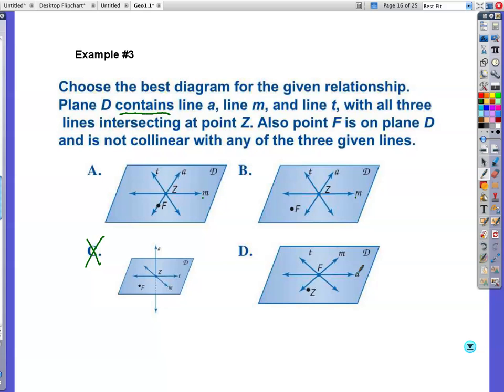All right, let's just check A, M, and T. With all three lines intersecting at point Z. So they have to intersect all three at point Z. Point Z. Uh-oh. This one's point F. So we're taking that one out. This is also point F is on plane D and is not collinear. So F is not collinear with any of the three given lines. And here it is collinear. Here it is not. So this is our correct answer.